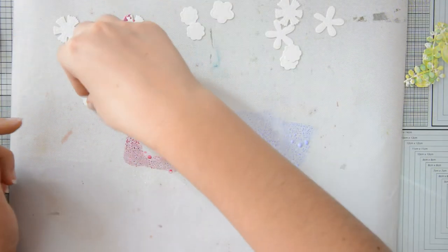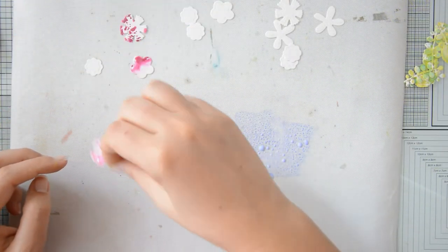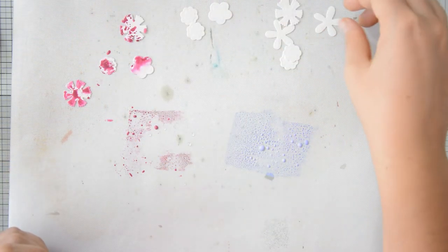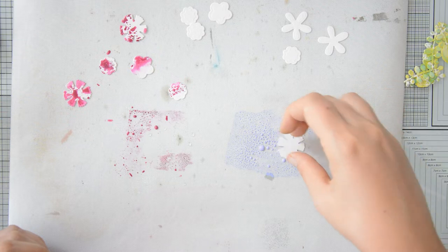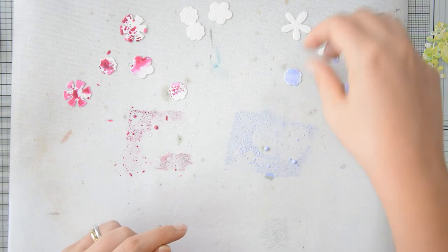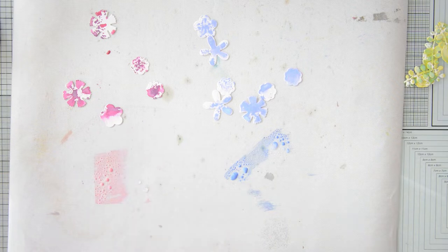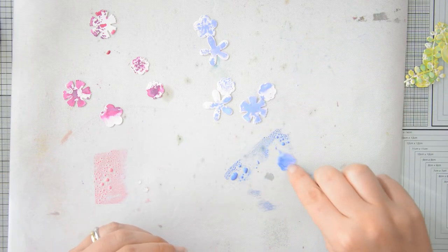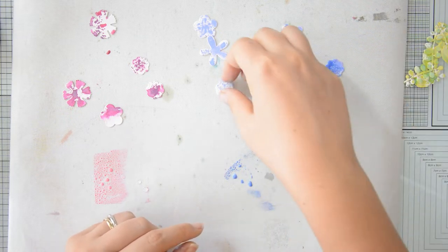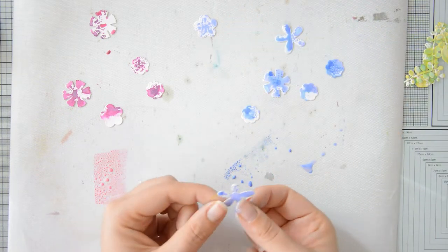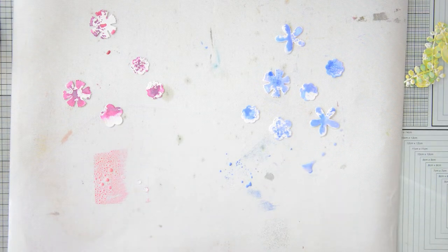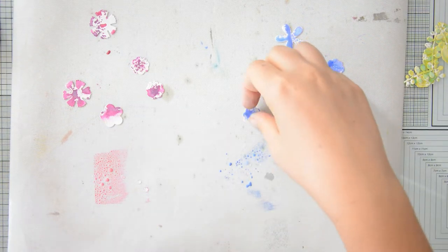I repeated the same steps to add color to my florals. And for the ones on the left, I used Seedless Preserves and Picked Raspberry Distress Oxides. And for the ones on the right side, I used Shaded Lilac and Blueprint Sketch. So as I did for the leaves, I added the first color. It was Seedless Preserves and Shaded Lilac. I dried that layer really well with my heat gun. And now I'm adding a second layer of color with Picked Raspberry and Blueprint Sketch.